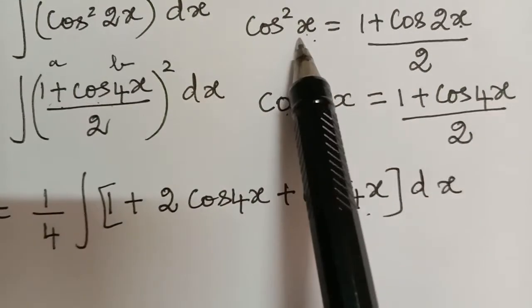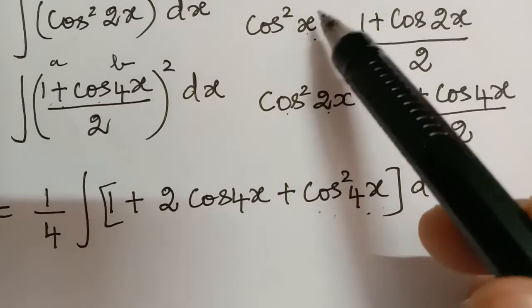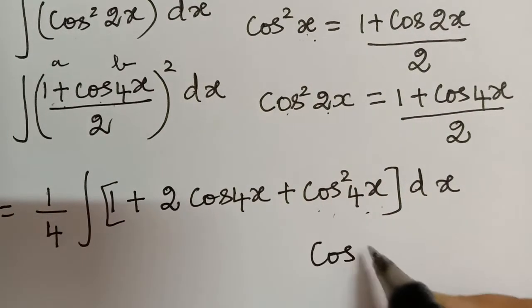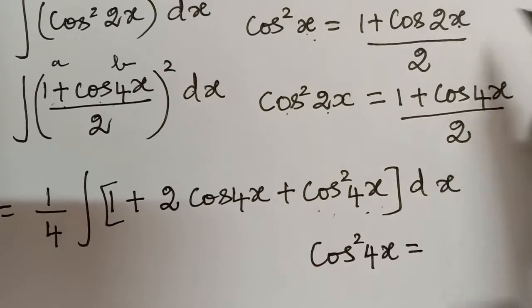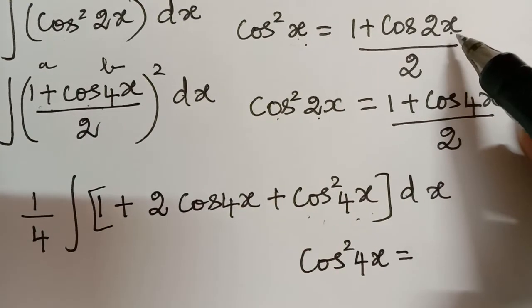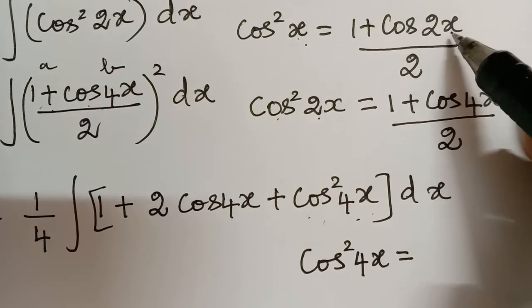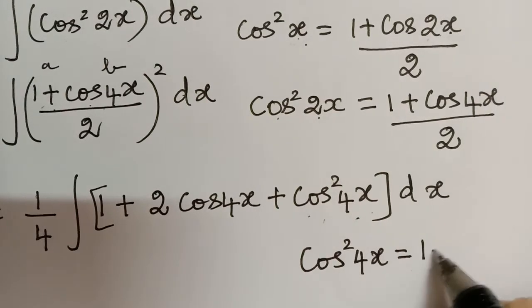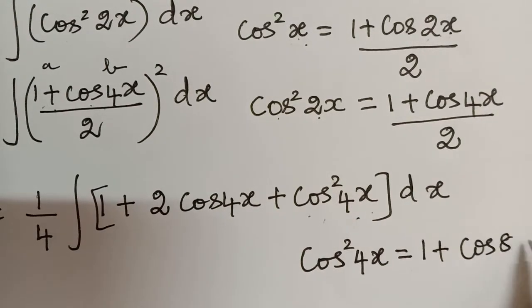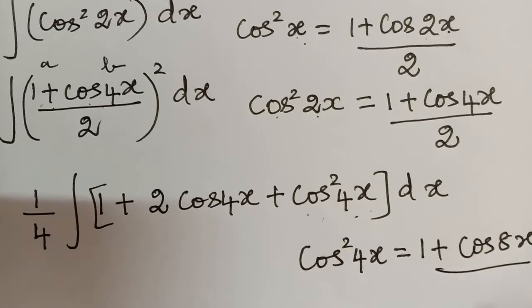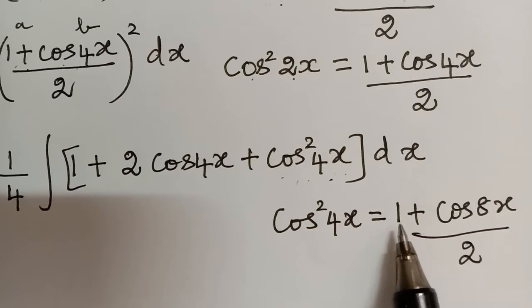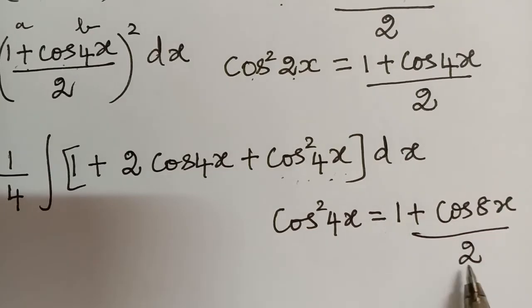We again have cos²(4x), so we apply the same formula. Now instead of x we have 4x, so 4x gets multiplied with 2 to become 8x. The formula gives cos²(4x) = (1 + cos8x) / 2.